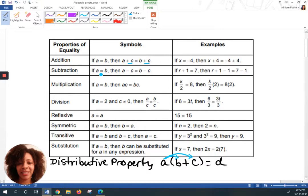Subtraction, same thing. If A is equal to B, the only difference is the sign. A minus C equals B minus C. So we're subtracting on both sides, because when you have an equal sign, what you do to one side, you do to the other. That's balancing the equation. So R plus 1 equals 7. If you want to get that 1 to the other side, we would have to subtract 1 on both sides.